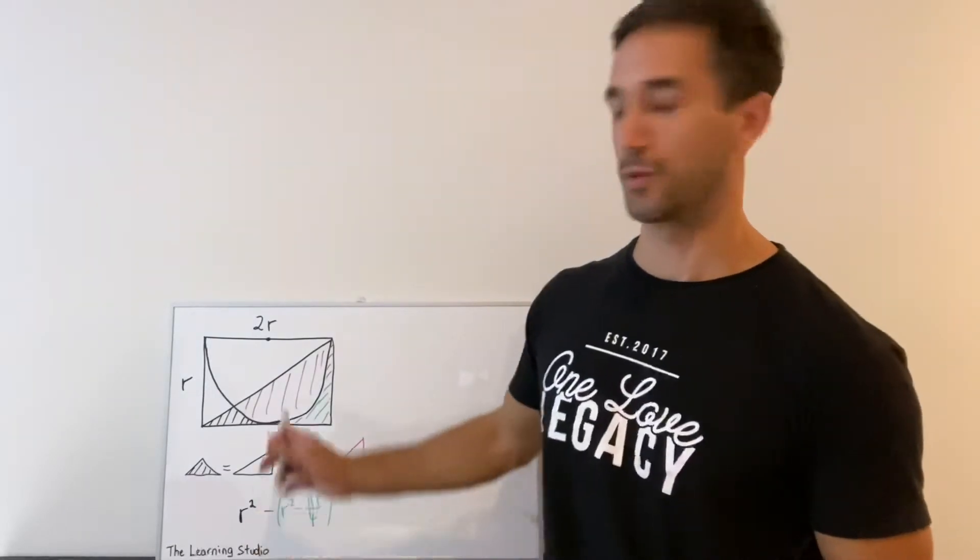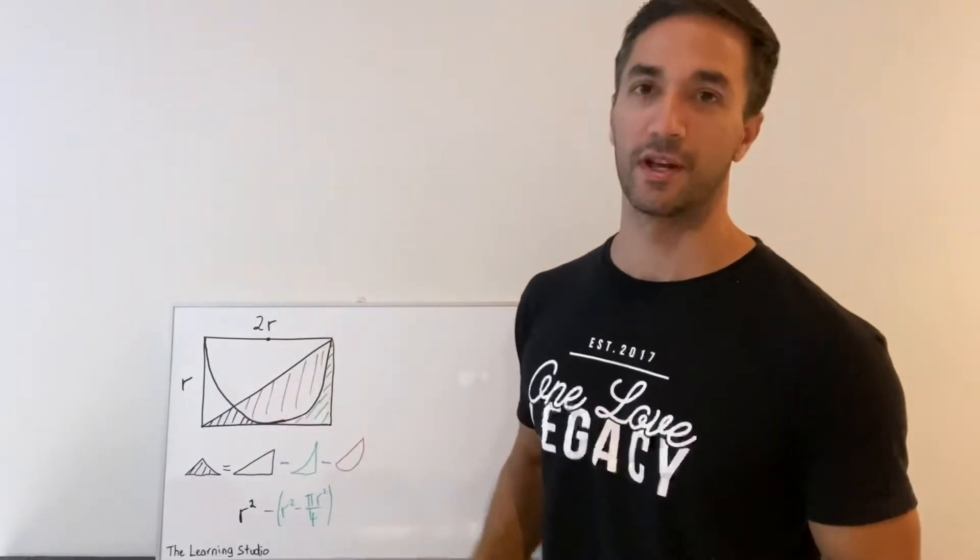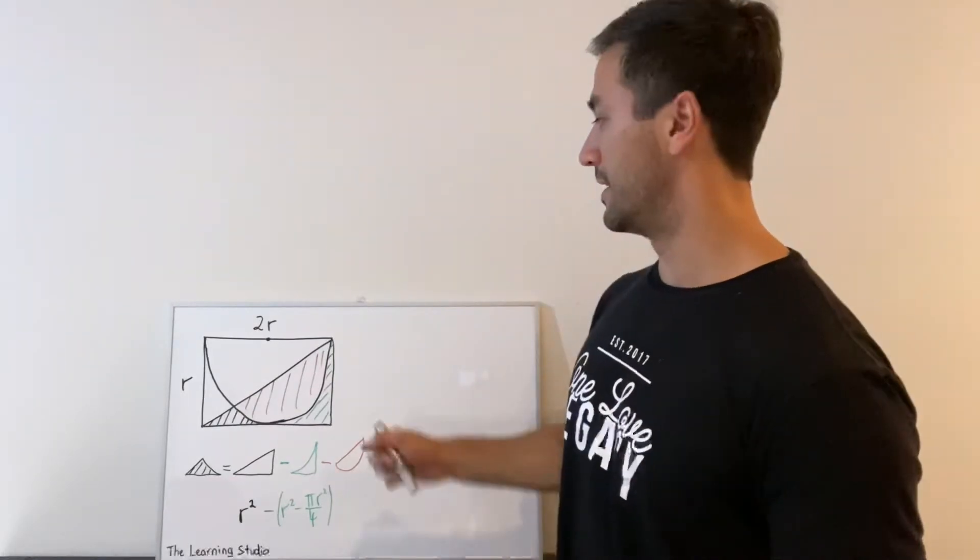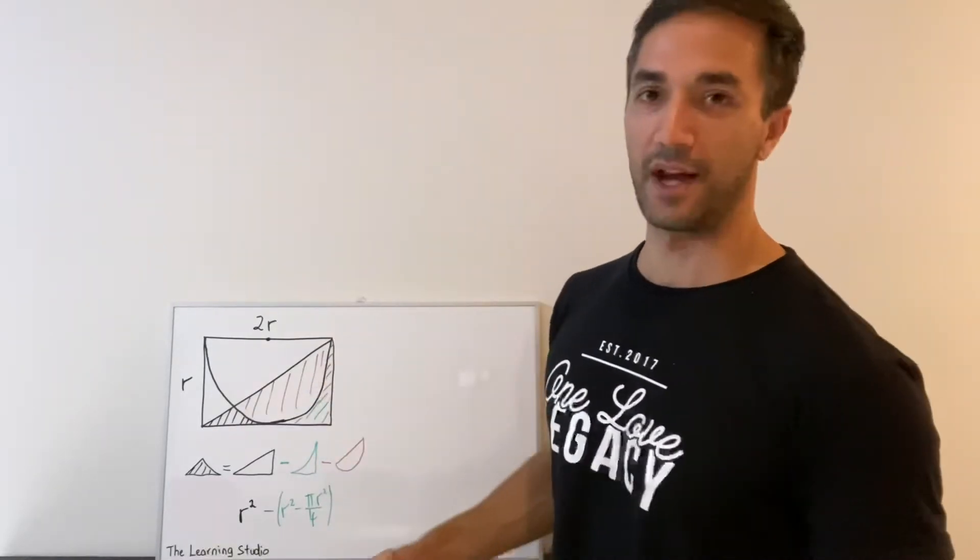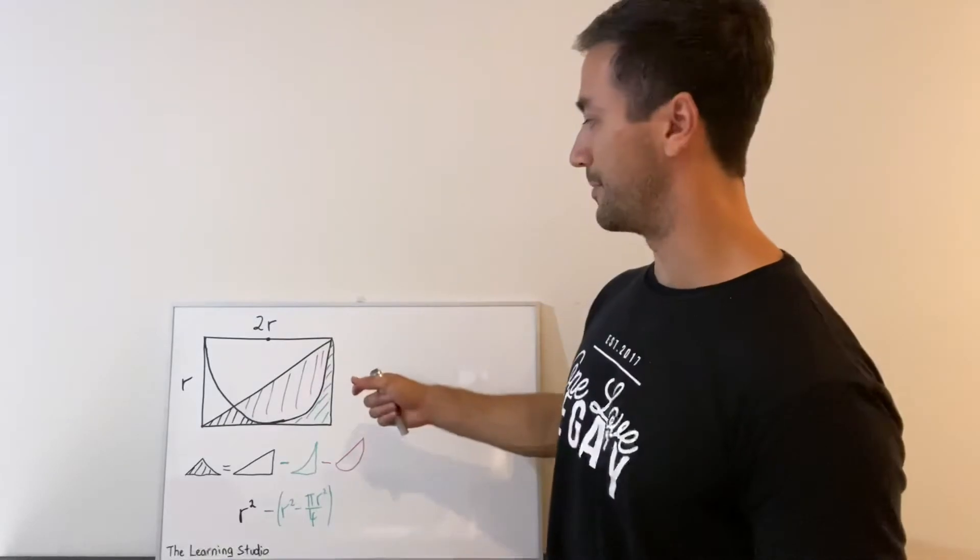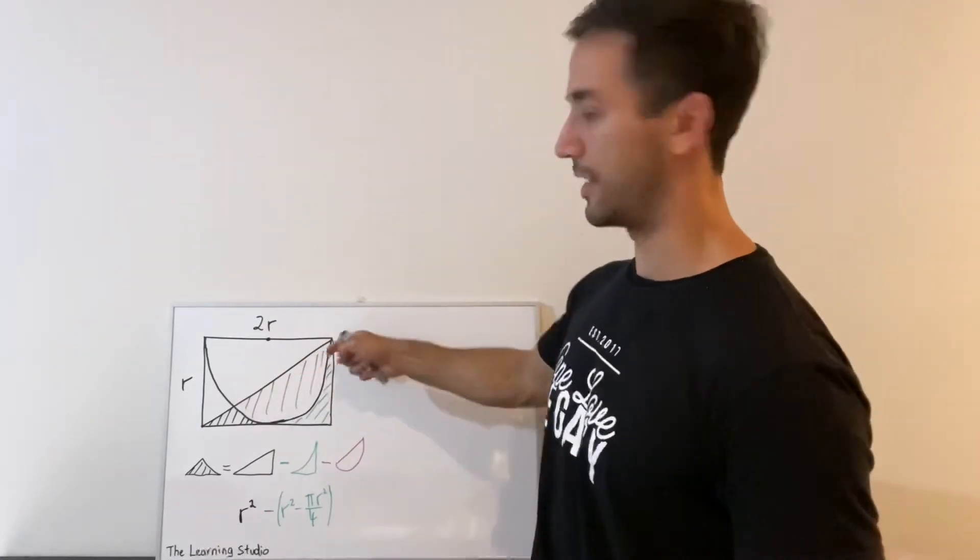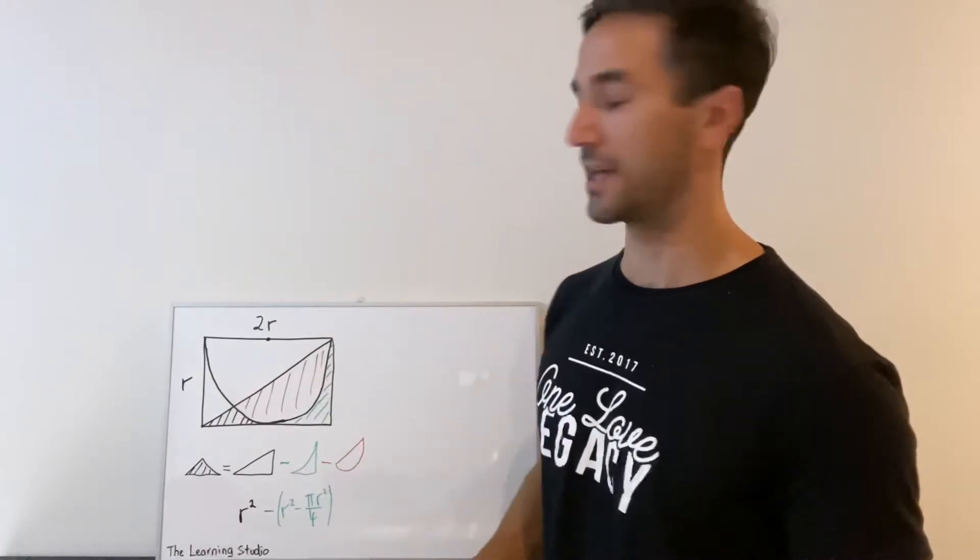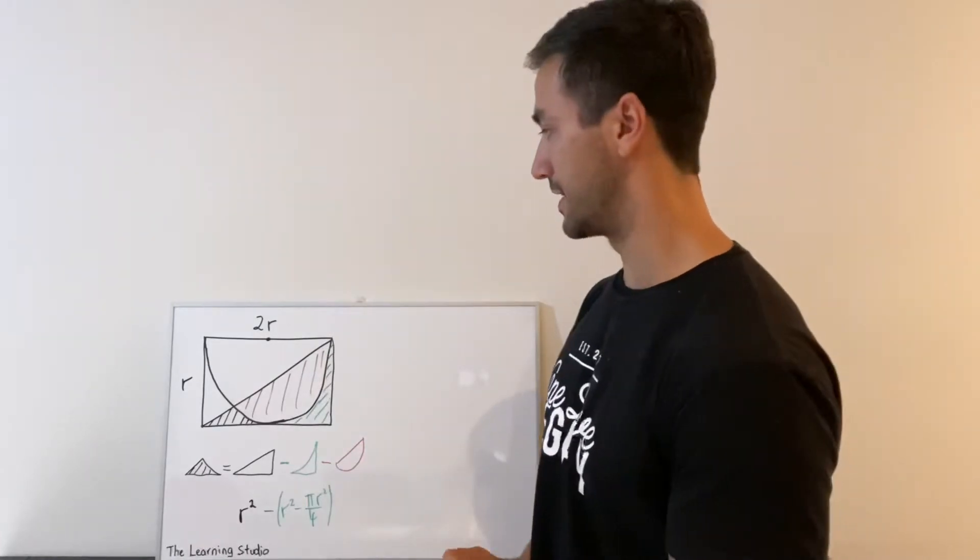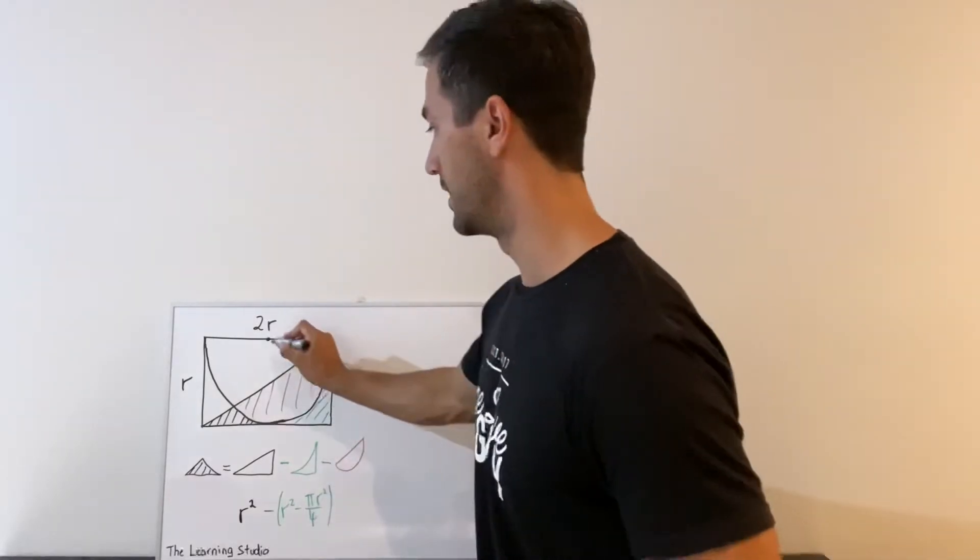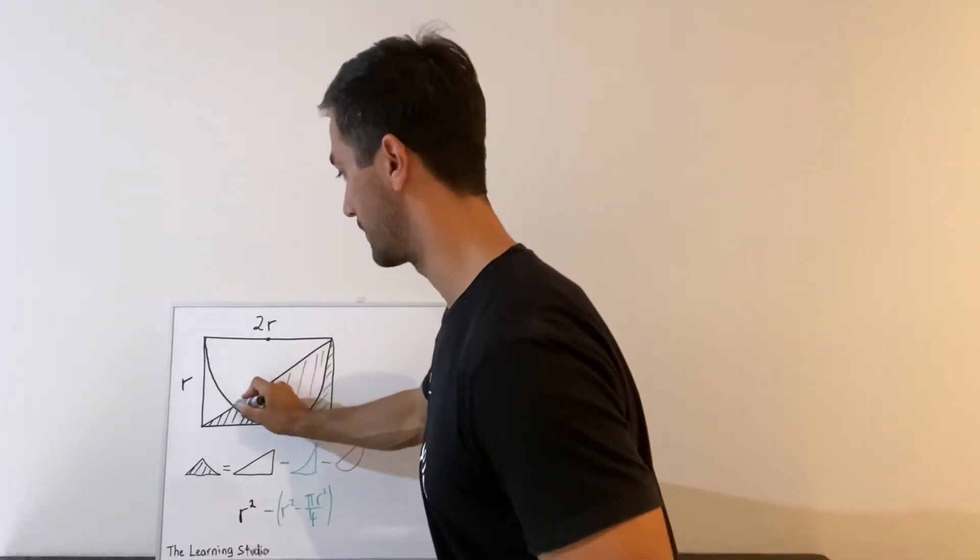All right, so now we get to the hard part, which is working out the area of this red section. And so this is where the trigonometry is going to come into it. First of all, we've got to find the triangle we need to use, and we're going to get that by looking at how we can get anywhere close to this red section in the first place. So the easiest way to even start getting that red section involved is to look at this sector of the circle.